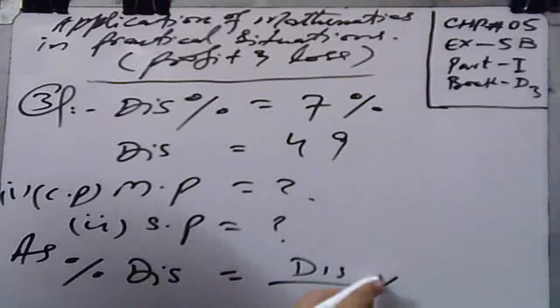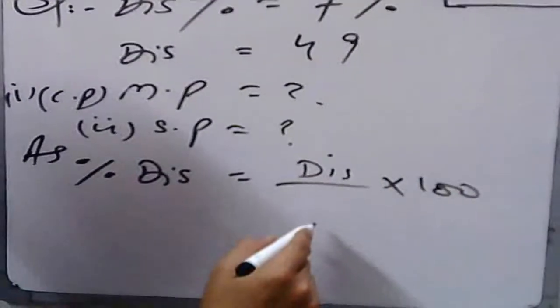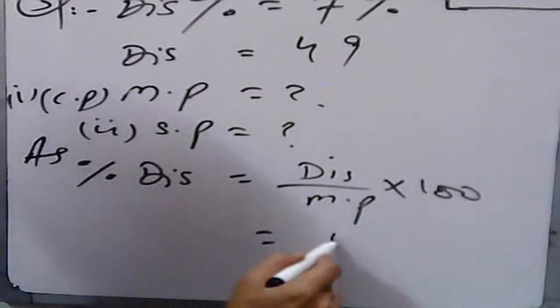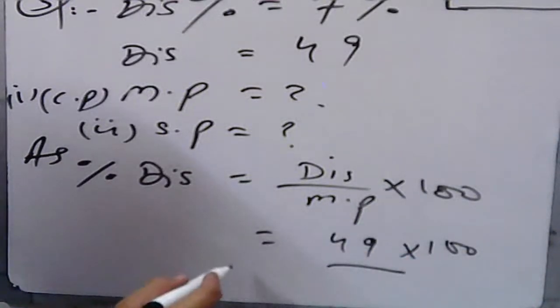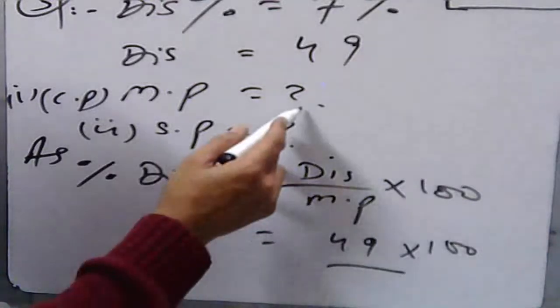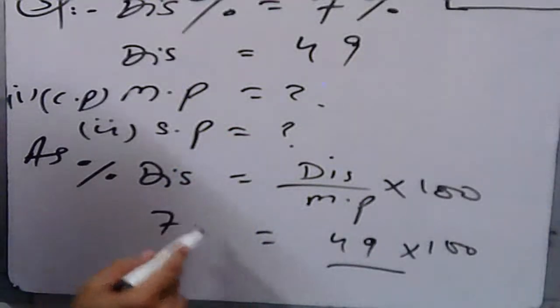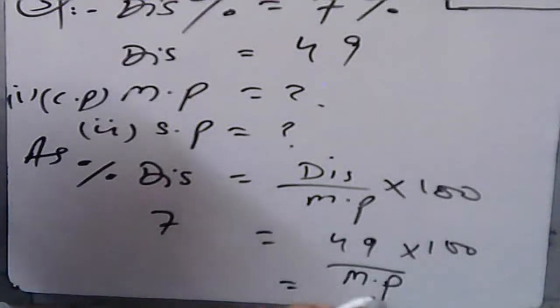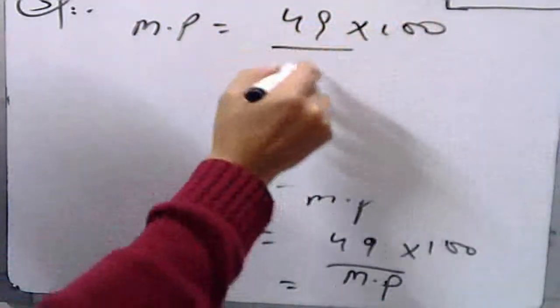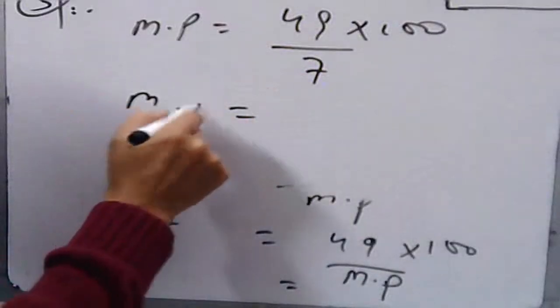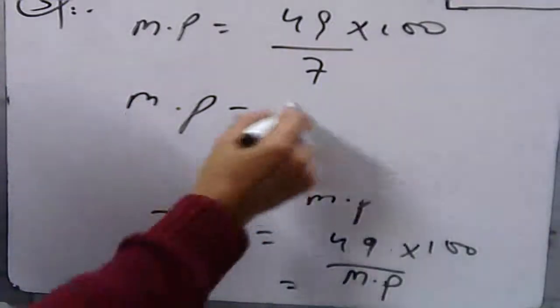Using the percentage discount formula: Percentage Discount = (Discount × 100) ÷ Market Price. Discount is $49, percentage discount is 7%, and market price is unknown. By cross multiplication: Market Price = (49 × 100) ÷ 7. After simplification, the market price equals $700.